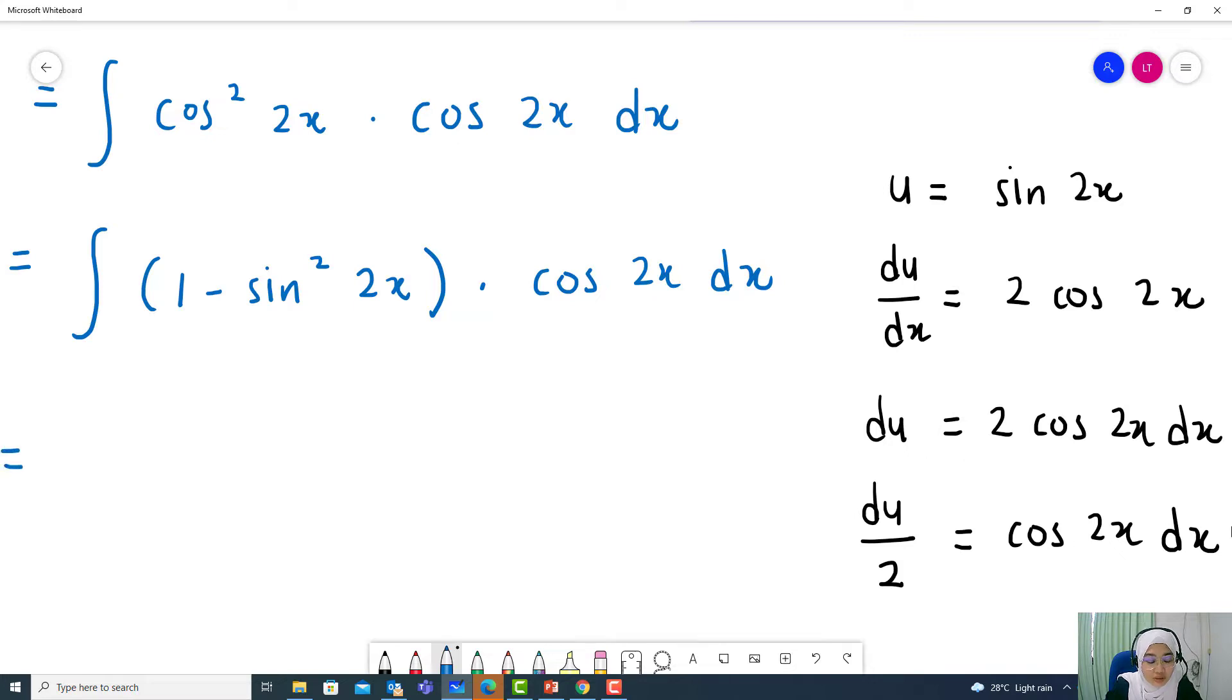So now we can substitute in terms of u. So integral 1 minus sin squared 2x here. Sin squared 2x is u squared. Multiply cos 2x dx is equal to du over 2.